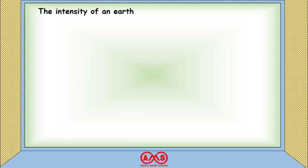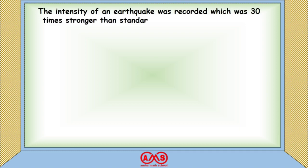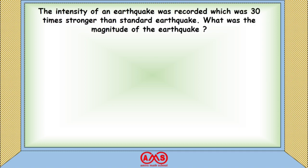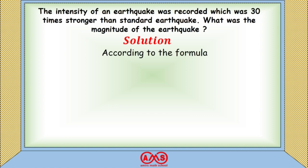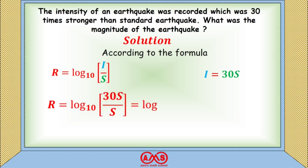The intensity of an earthquake was recorded which was 30 times stronger than the standard earthquake. What was the magnitude? According to the formula R = log₁₀(I / S), here I = 30S. So R = log₁₀(30S / S) = log₁₀(30) ≈ 1.48, approximately 1.5.